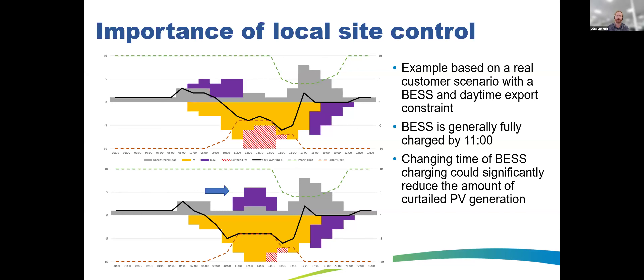On PQ monitoring type: we use 5-minute intervals for real power, reactive power, and voltage — specifically not waveform data. On customer numbers: we have roughly 500 customers currently signed up to dynamic connections in Queensland on an opt-in basis. We expect that number to increase significantly over time as the technology and inverter support improves.